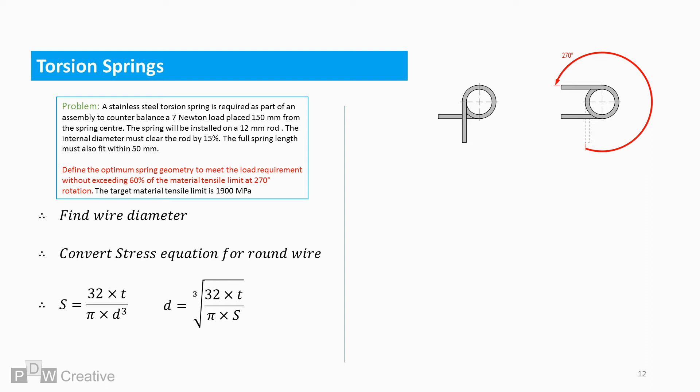Let's use this to work out the wire diameter, bearing in mind that stress cannot exceed 60%. The tensile limit is 1,900 MPa. So, 0.6 times 1,900 gives 1,140 MPa as the 60% target.